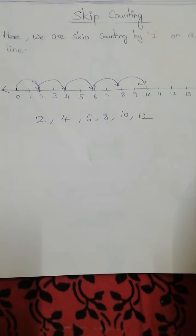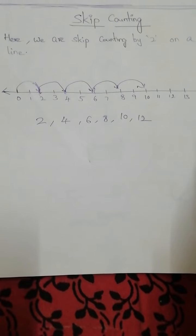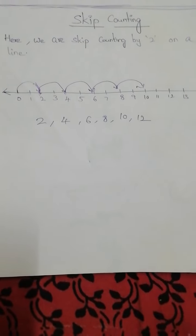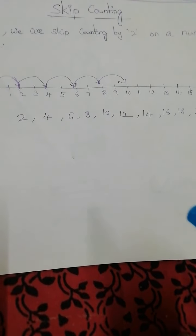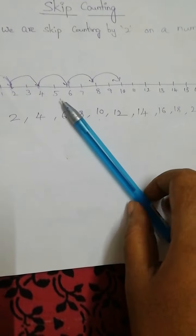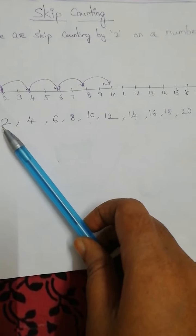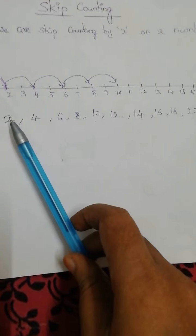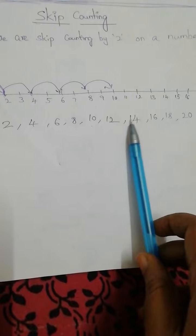Before the child goes to multiplication, she should thoroughly understand skip counting. For example, skip counting by two will give us the number two table: two, four, six, eight, ten, twelve, fourteen, sixteen, eighteen, twenty.